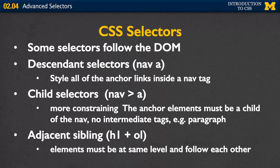The final one is the adjacent sibling selector. That's not one I use very much in my own coding, but I wanted you to know about it because there's a good chance you'll see it in other people's code. The adjacent sibling requires elements to be at the same level and follow each other. So if you have a section with an H1 and then an ordered list, they would be siblings. But if the ordered list was inside a paragraph, it wouldn't work that way.